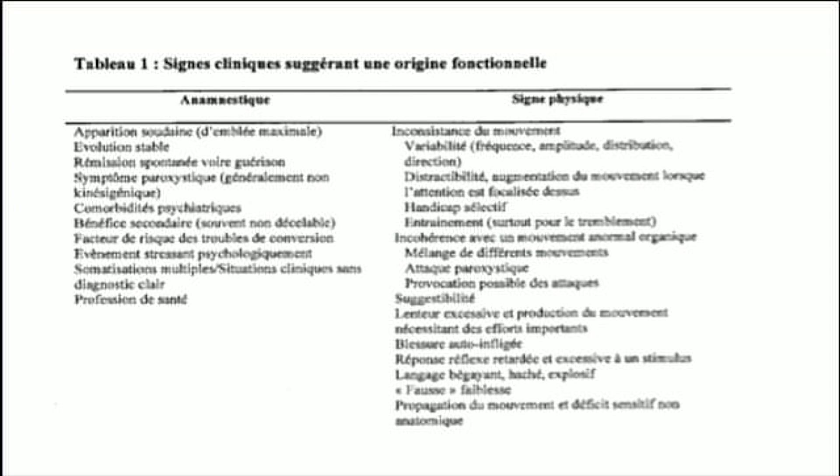There are various clinical criteria and signs that can suggest a functional origin. To summarize, we should be suspicious in front of brutal onset, immediately maximal deformity, and identified precipitating factors. Also suspicious: an unusual medical or surgical course, stable evolution with periods of remission and aggravation, selective handicap for some activities with discordance between physical exam and professional activity, distractibility, disappearance of deformity on passive mobilization — sometimes with voluntary contraction by the patient — and failure of all therapeutics.